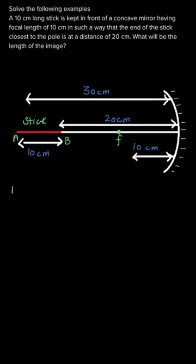If we draw a diagram using the information given to us, it would be something like this. Here we have a concave mirror whose focal length is 10 cm, and a stick is kept at a distance of 20 cm, where its first end meets at 20 cm and the length of the stick is 10 cm. So the distance from the other end is 30 cm.